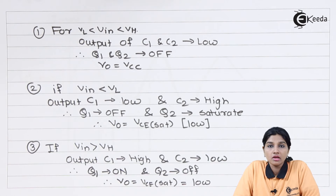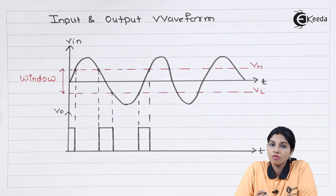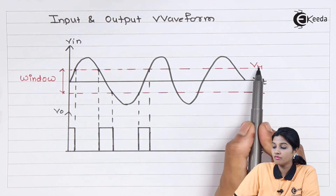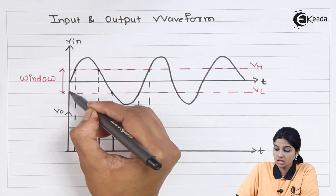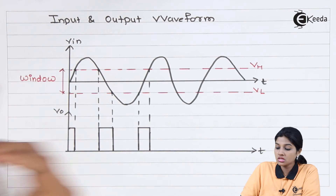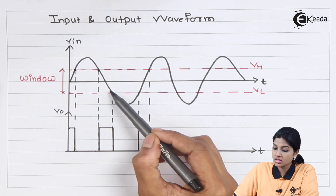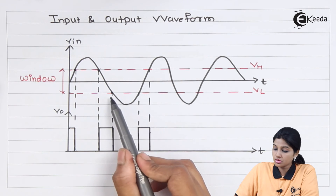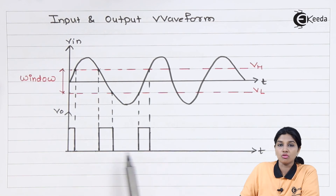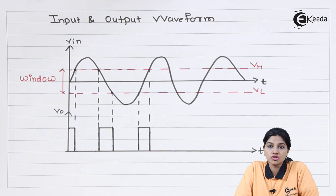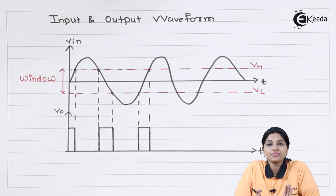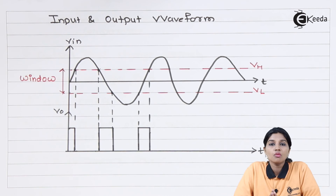To understand the circuit operation in detail, consider the input-output waveform. The window is present between VH and VL, where VH is the higher level and VL is the lower level. Whenever the input signal is present between VH and VL, the output goes high. When the input signal increases above VH, the output goes low. Again when the input is within the window the output becomes high, and when the input decreases below VL the output goes low. In this way we can detect whether the unknown voltage V_in is in the range of VH and VL or not.